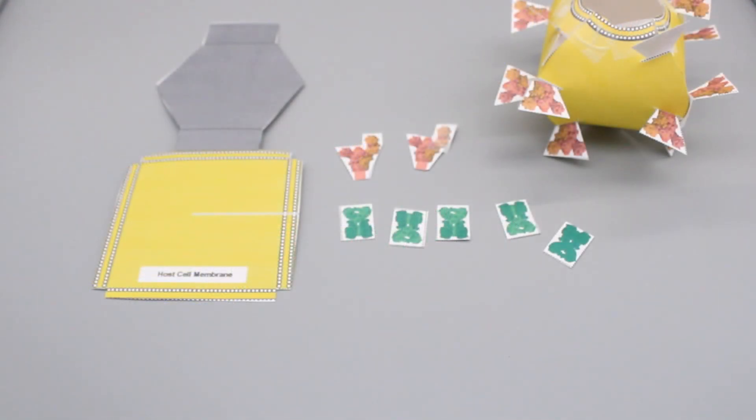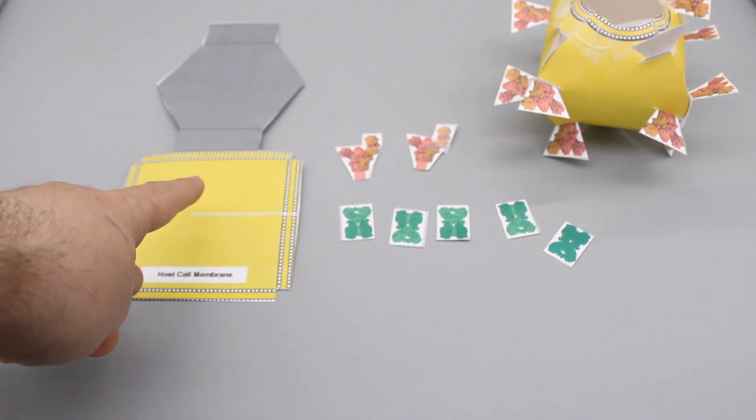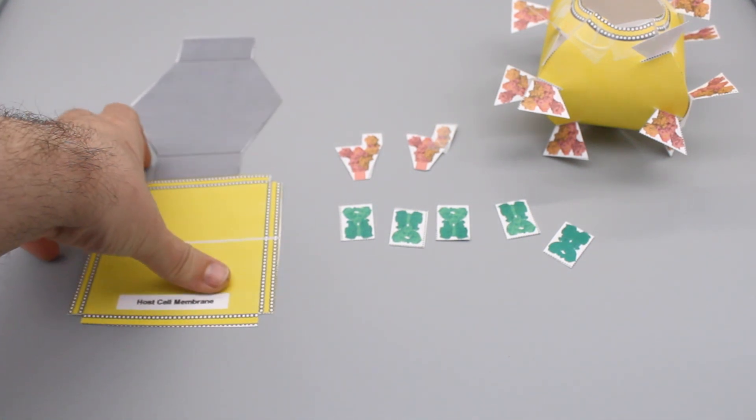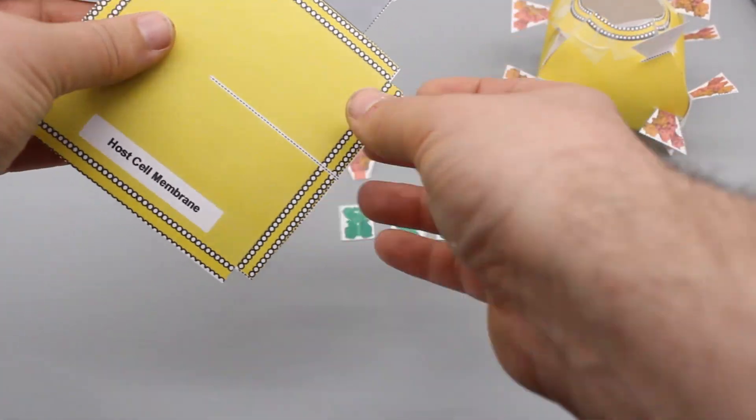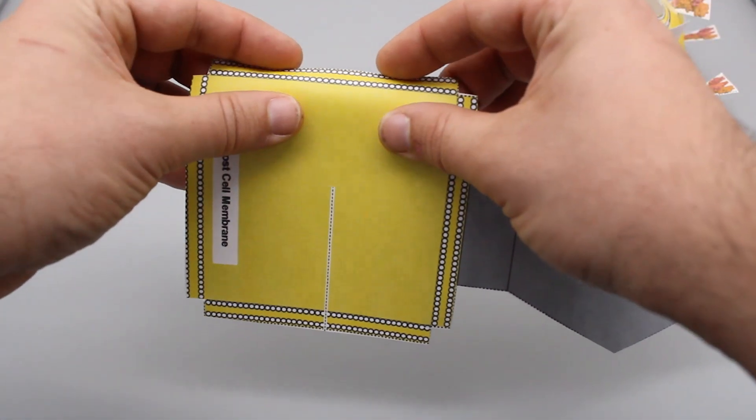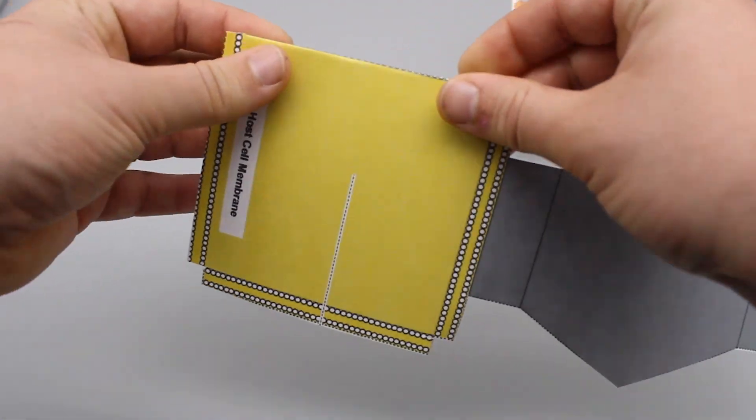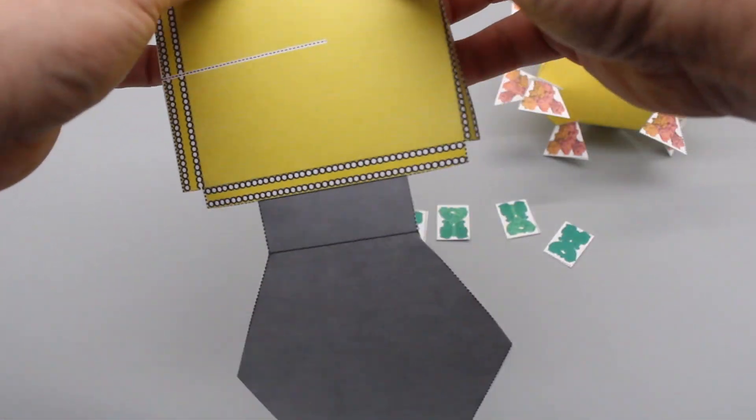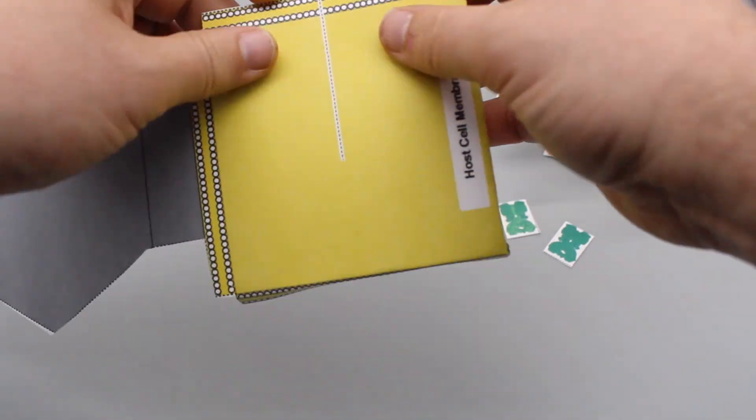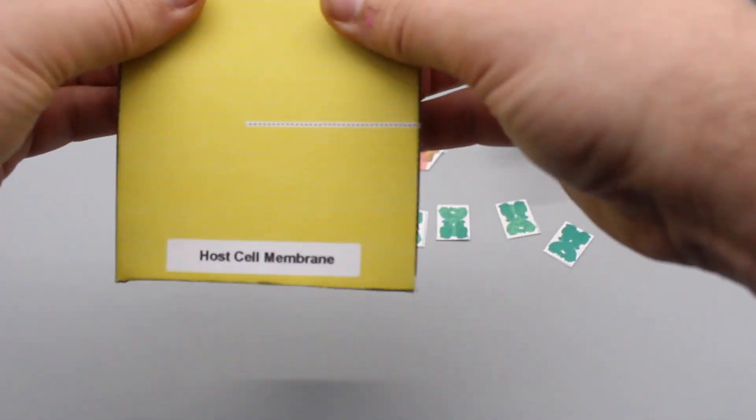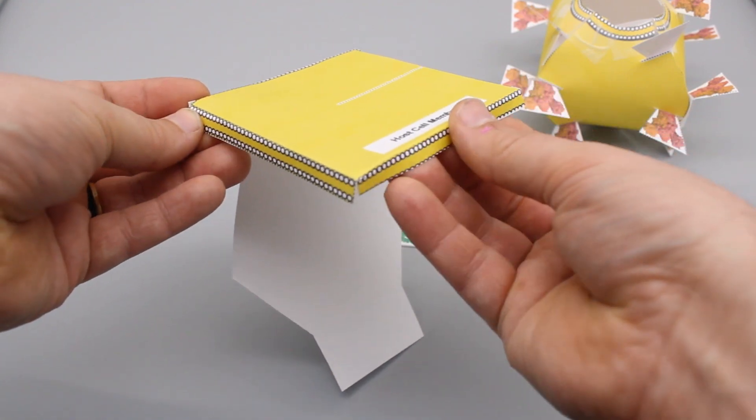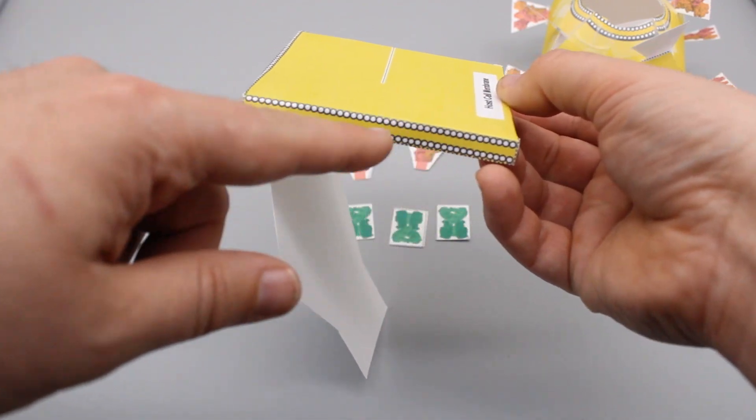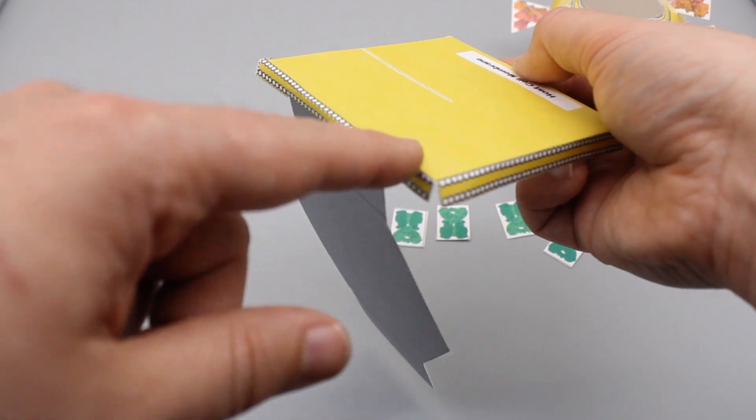When you're done, you're left with a few components. Let's start with this piece over here. This is going to fold up into our host cell membrane. The first thing we're going to do is fold each one of these little rectangles down. That will give us our membrane with a view of the side where that phospholipid bilayer is visible.